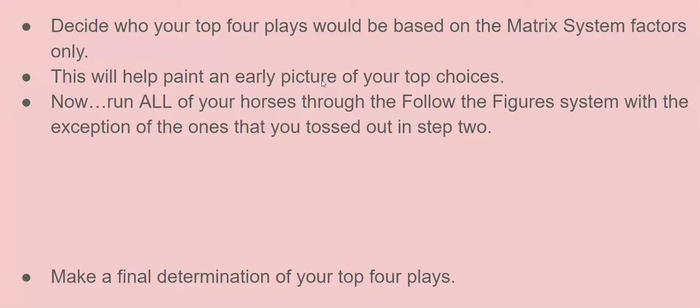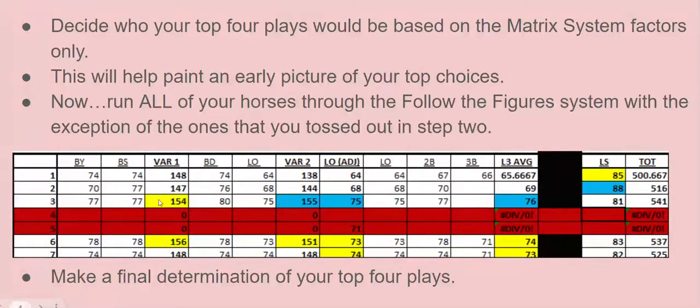Now, what you did was you helped yourself paint an early picture of your top four choices. Now run all your horses through the follow the figures system with the exceptions of the ones that you tossed out in step two—the ones I talked about, the ones that did not show up at all in the initial scan or in the matrix factors. And then when the grid is finished, you may have something like this. Now again, this is a different grid from before, actually it's the same one I think. But if you notice, that three horse—that class dropper pace setter—is also showing up in some blue here, and I didn't have it marked, but he's also my top total point getter here too. So I made a wise choice with that two-three being my number one pick.